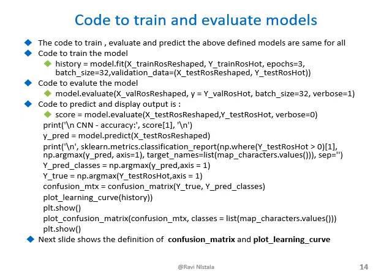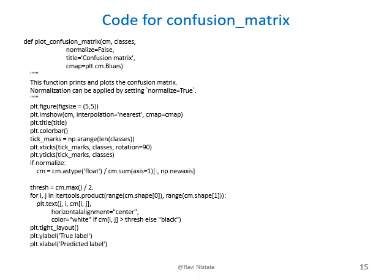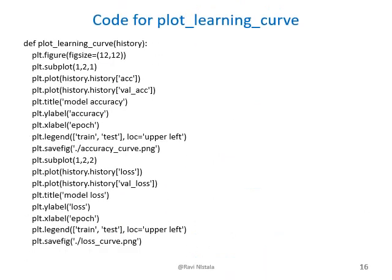This slide shows the code to train and evaluate the model. The following slide shows the code to create a confusion matrix. This slide shows the code to plot the learning curve. The method takes a history object as input — the history is the output from training a model — and it calculates the accuracy and loss per epoch.